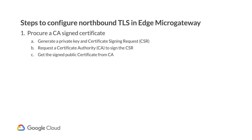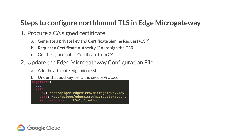There is a link in the description of this video on how to achieve that. Once the certificate and private key are prepared, the second step is to update the Edge Micro YAML configuration file for the desired organization and environment. The certificate and key must be on the file system in PEM format so that we can reference them from the Micro Gateway config. Finally, we will reload the Edge Micro Gateway server. I will now demonstrate how to configure what we have just described.